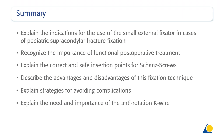You should now be able to: Explain the indications for the use of the small external fixator in cases of paediatric supracondylar fracture fixation. Recognise the importance of functional post-operative treatment. Explain the correct and safe insertion points for shunt's screws. Describe the advantages and disadvantages of this fixation technique. Explain strategies for avoiding complications. And explain the need and importance of the anti-rotation K-wire.